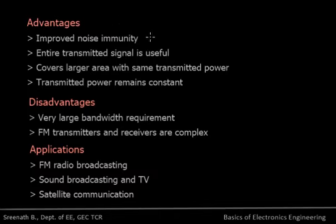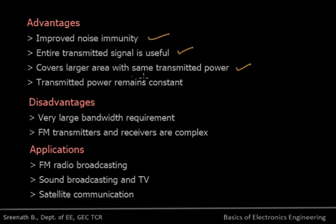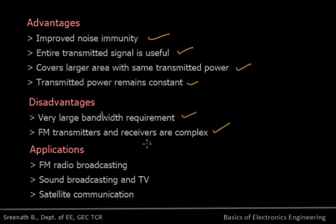Advantages of FM include improved noise immunity, useful transmitted power, and coverage of a larger area with the same transmitted power. FM is clearer than AM, and with minimum power it can transmit signals over a larger area. Transmitter power remains constant with no variation. Disadvantages include large bandwidth requirement and complex transmitters and receivers. Applications of FM include FM radio broadcasting, sound broadcasting in TV, and satellite communication.